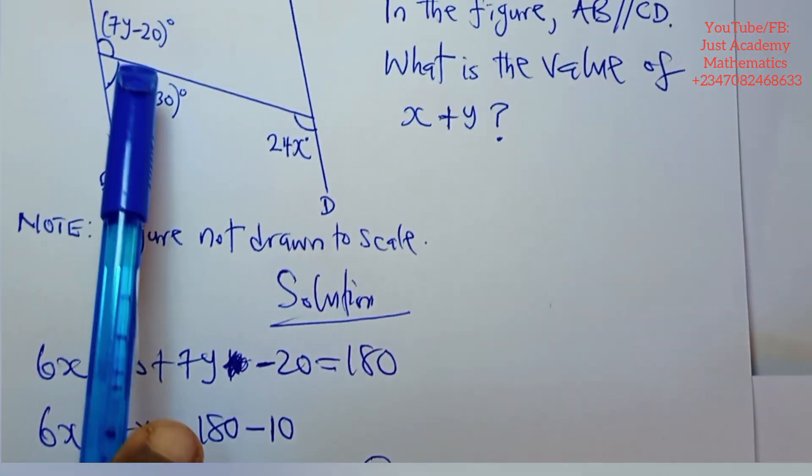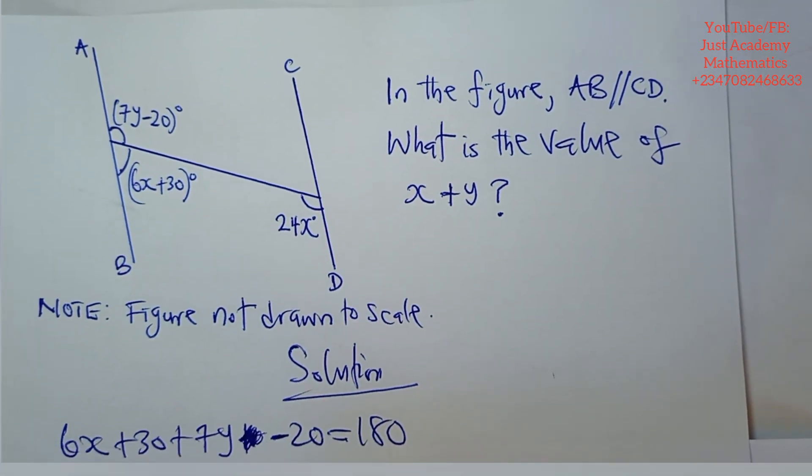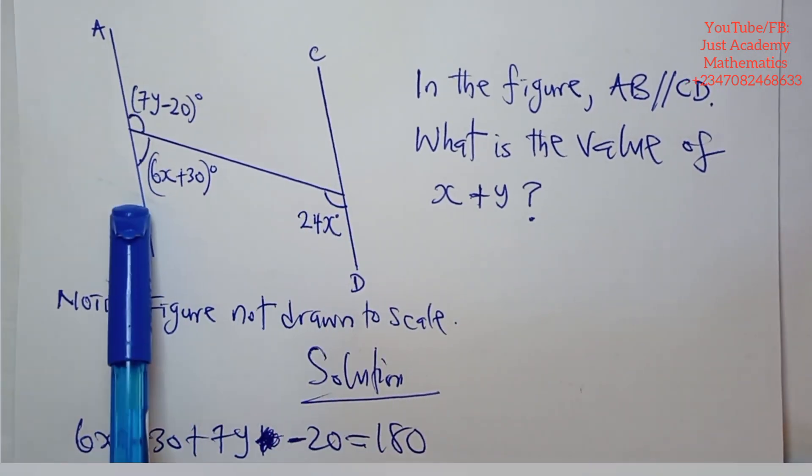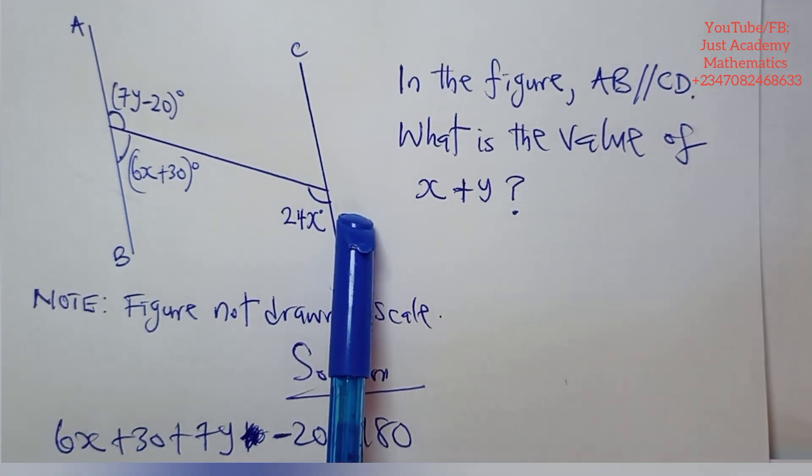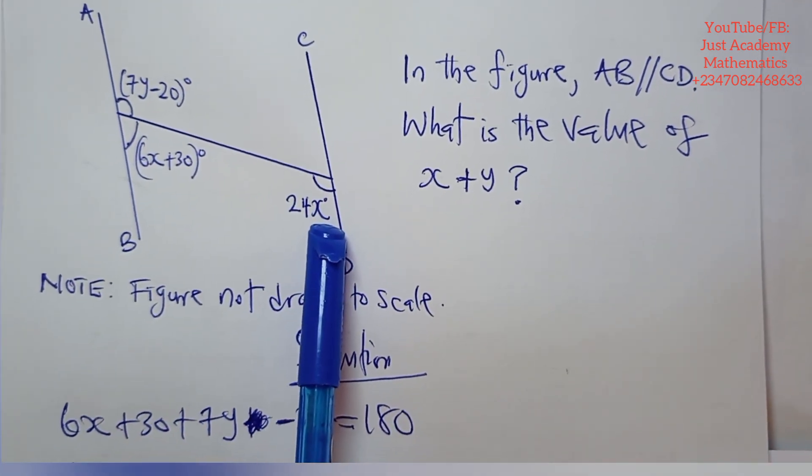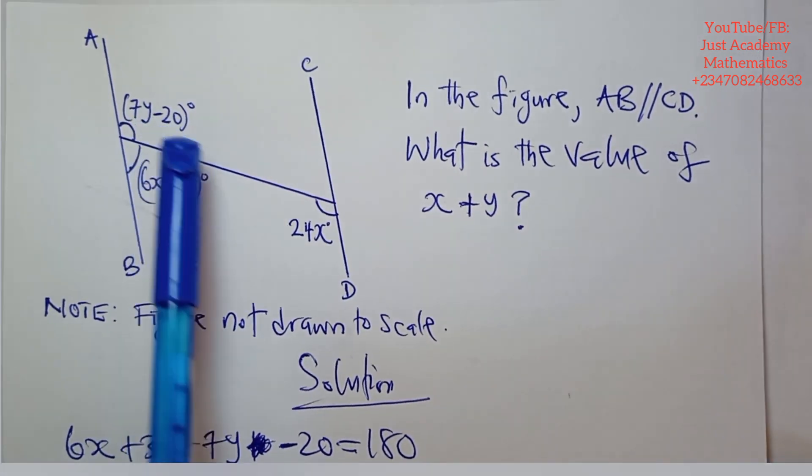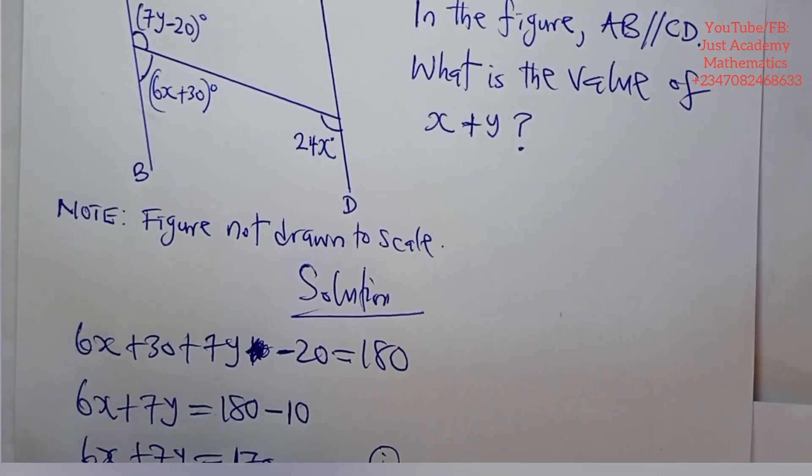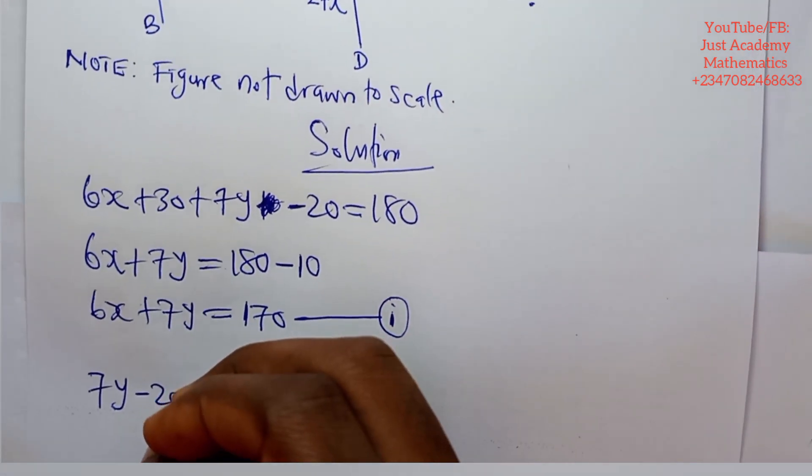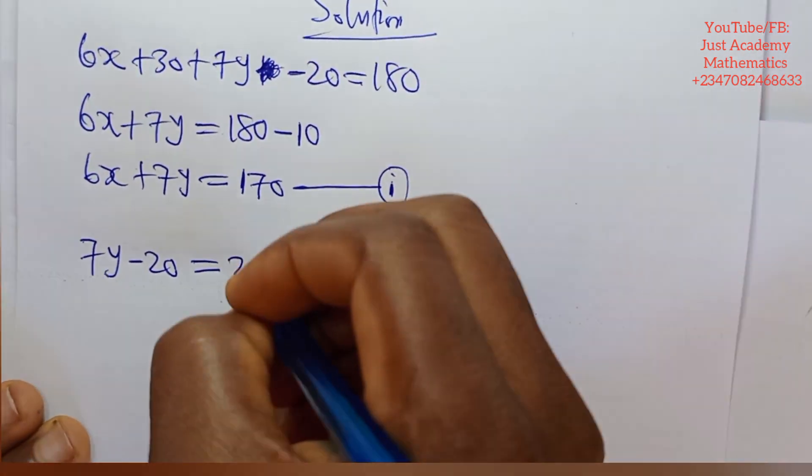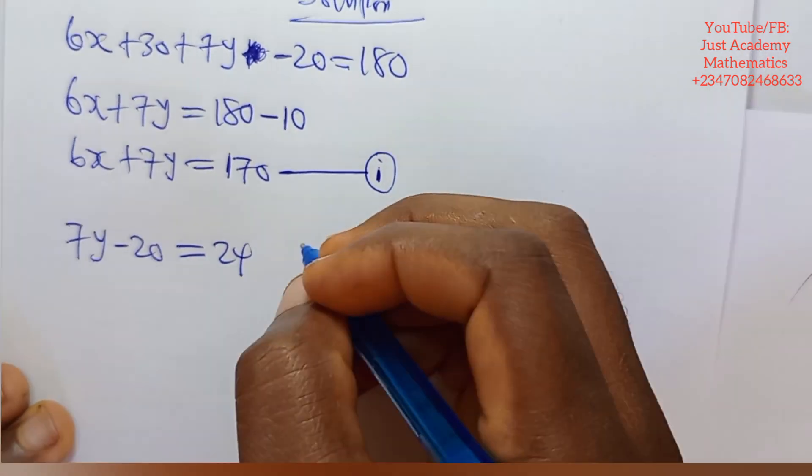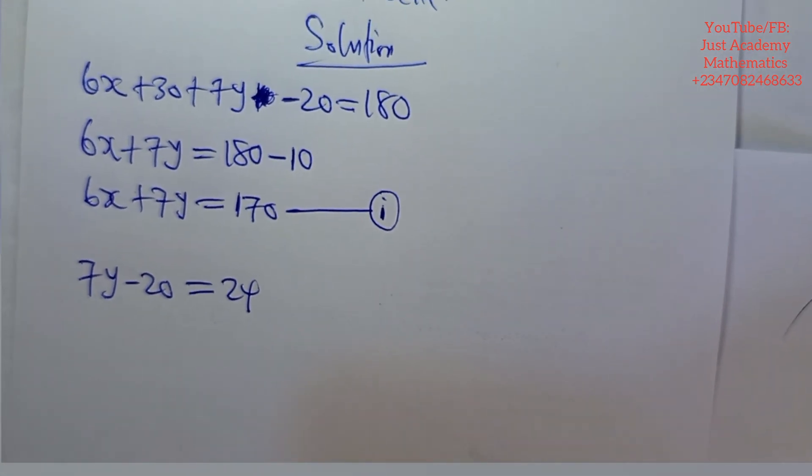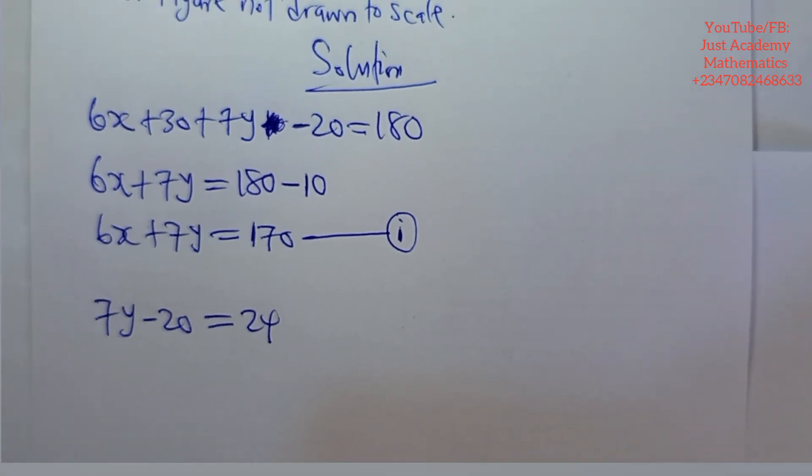Because this one is not enough information for us to get x and y. Now, what other possibility do we have? In this, since these two are parallel lines, 24x is alternate to this. Alternate angles are what? So I can say that 7y minus 20 is equals to 24x. And the reason is because they are alternate angles.